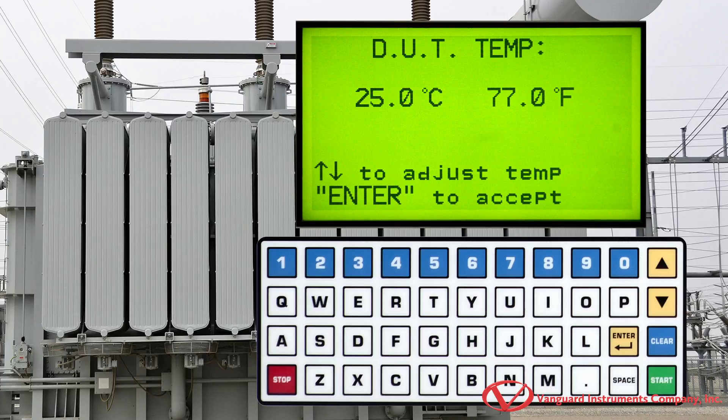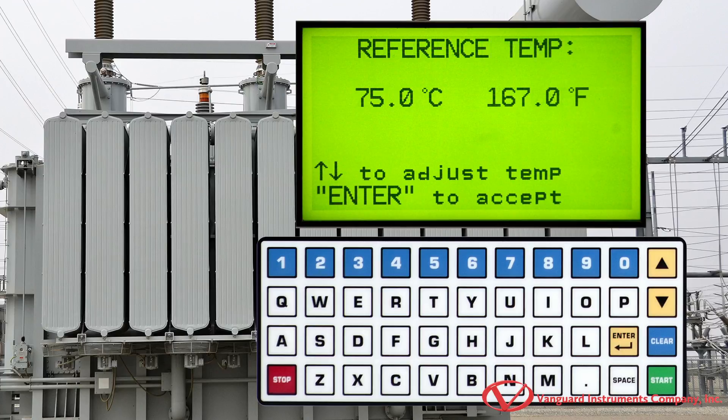Now you can adjust the temperature for the device under test. You can press the up or down arrow keys to increase or decrease the temperature respectively. Then press the enter key. You can now adjust the reference temperature by using the up or down arrow keys. Once set, press the enter key.